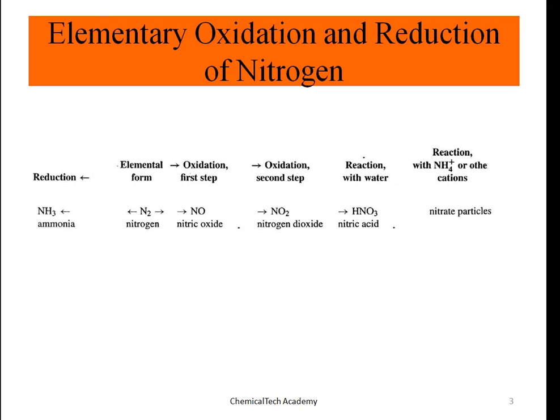As we discussed in the sulfur oxides part, reduction and oxidation: reduction occurs when we add hydrogen to a compound or remove oxygen from it. On the other hand, oxidation means addition of oxygen and removal of hydrogen. If we consider elemental nitrogen N2 and add hydrogen to it, we produce ammonia — so it is reduced, from right to left.